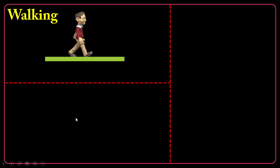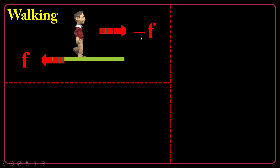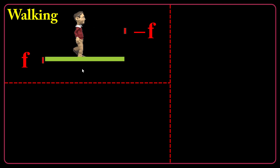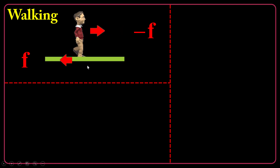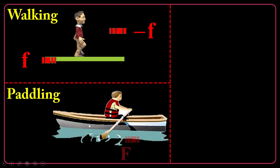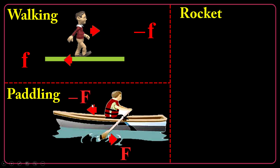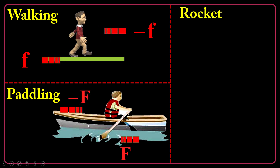Newton's third law is all around us. When I walk, I push the ground back by means of friction, and the friction has a reaction on my body, and I can walk. This is why it's very difficult to walk on ice — because there is not enough friction to accelerate me. The interaction is very, very weak. In paddling, you use paddles to push the water back, and the system — including you, the boat, and the paddles — is pushed forward.